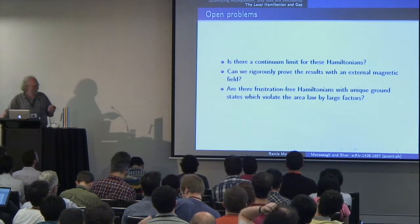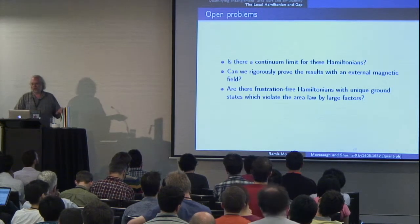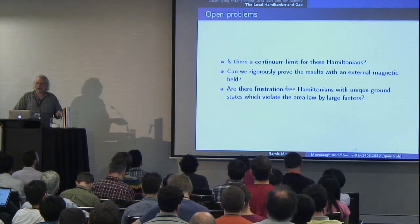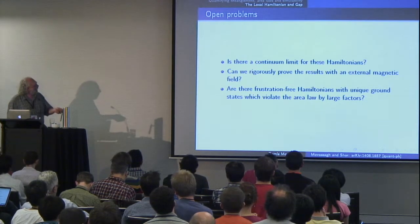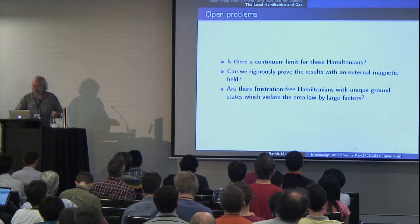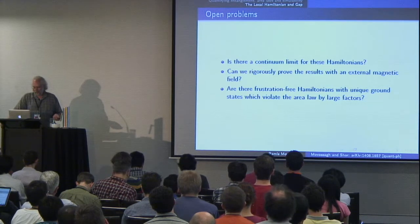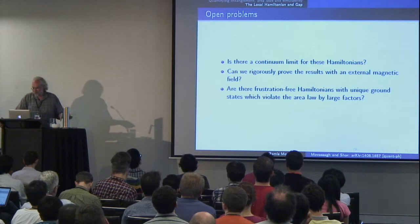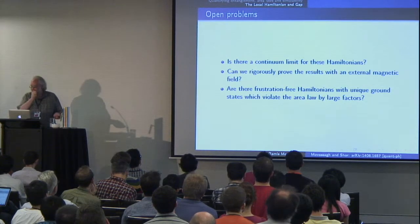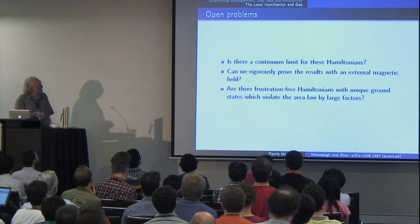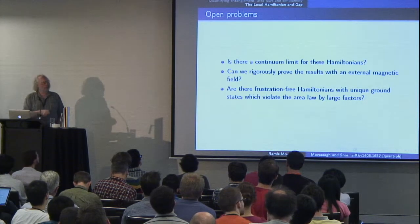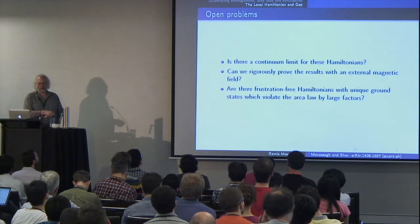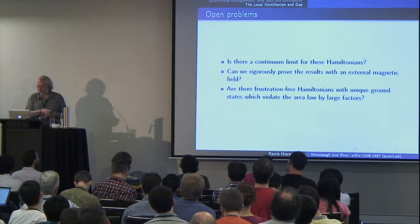Here are some interesting open questions. First, is there some kind of continuum limit for these Hamiltonians? We know it's probably not a conformal field theory. Second, can we rigorously prove the results when you have an external magnetic field? Third, are there frustration-free Hamiltonians with unique ground states and no boundary conditions which violate the area law by large factors?